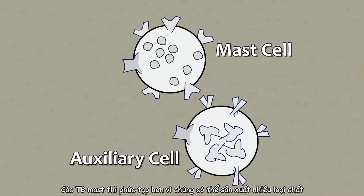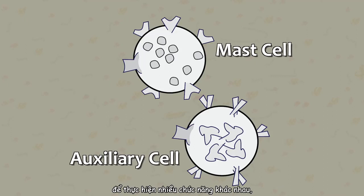Mast cells are more complex in that they can produce many different types of substances to perform a variety of functions, while auxiliary cells are more focused.